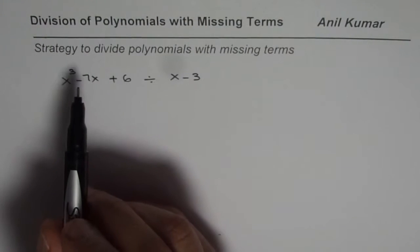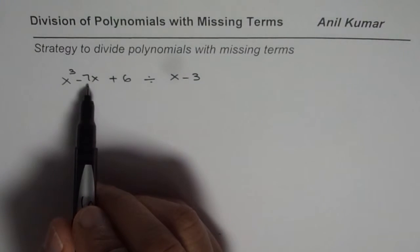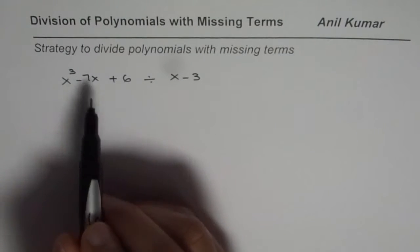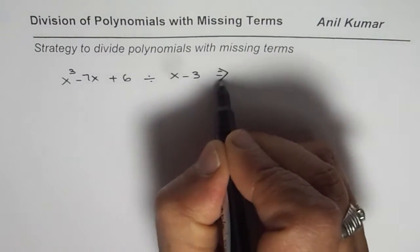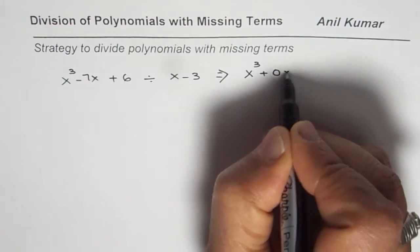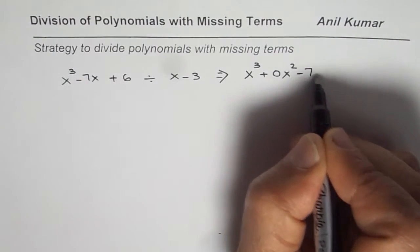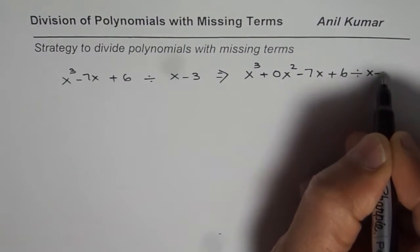The strategy is very simple. The strategy is to include that missing term with a coefficient of 0. For example, we could write the same thing as x cubed plus 0x squared minus 7x plus 6 divided by x minus 3.